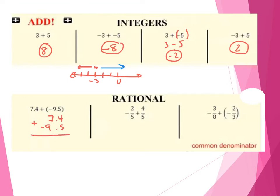Think about the last example — when we added 3 plus negative 5, we said that this is basically subtracting the two numbers. Now we can go about doing this by lining up the decimals. But at this point, I want you guys to just use your calculator. So punch in 7.4 plus negative 9.5, and you should get negative 2.1. We start off with a positive 7.4, we're adding to it negative 9.5 — it's like subtracting 9.5 — so we're subtracting a larger value and our answer is negative.